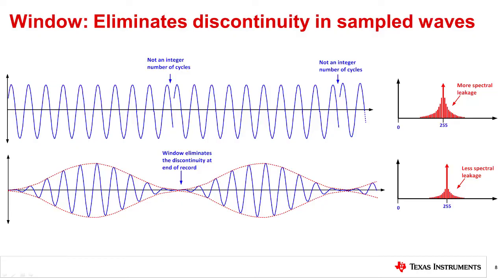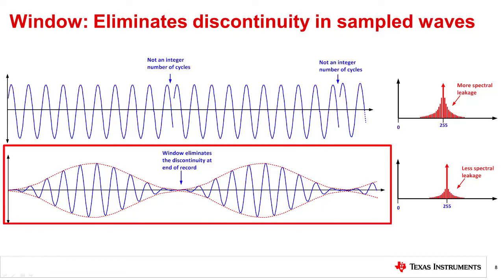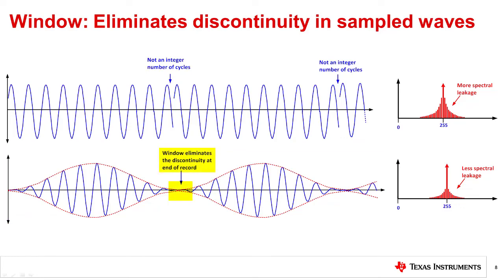One approach to minimizing the spectral leakage is to use a time domain windowing function. A window shapes the time domain signal to force the time domain signal to zero at the end of each record. The figure at the bottom shows the effect windowing has on the figure above. Notice that the discontinuity is masked because the window forces the function to zero at the discontinuity. The objective of windowing is to minimize spectral leakage.